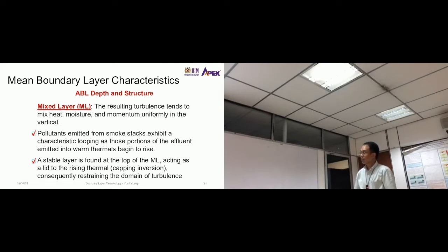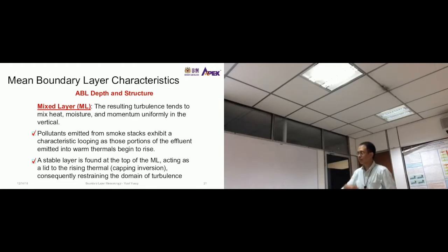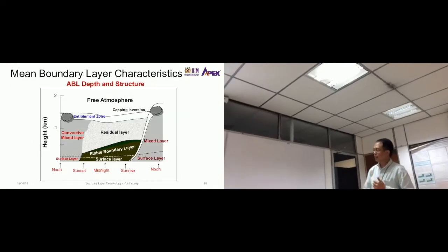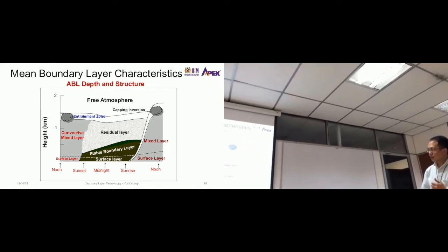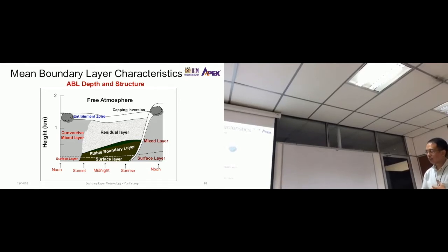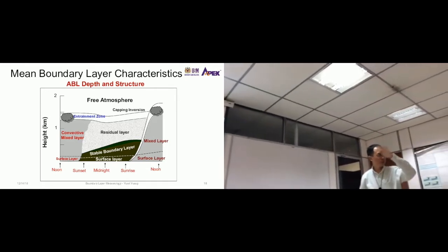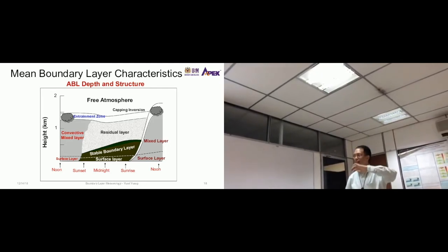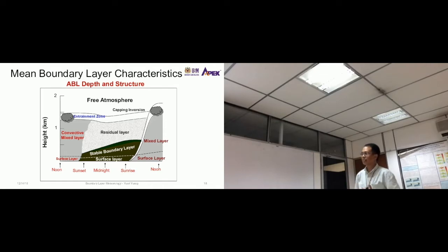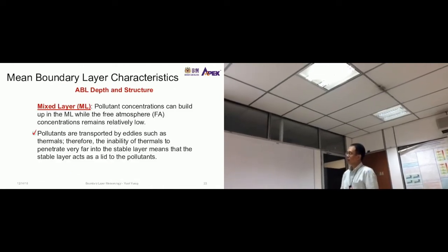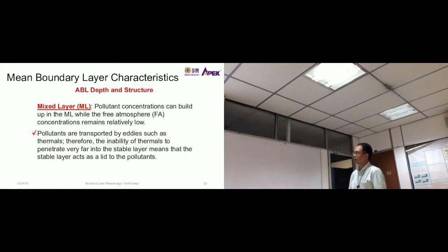Pollutants emitted from smokestacks exhibit characteristic looping — going up and down — as portions of the effluent emitted into warm thermals begin to rise. If there is a stable layer above the mixed layer, it acts as a lid, stopping the rising thermals. So pollutant concentrations can build up in the mixed layer while concentrations in the free atmosphere remain relatively low due to this capping.